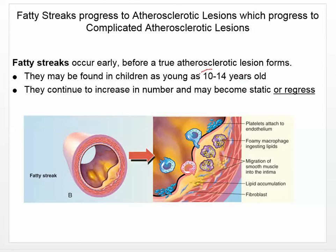The formation of fatty streaks is an indicator that you're going to form atherosclerotic lesions. The important thing to remember is that fatty streaks can be reversed — it is possible when this first starts happening for these fatty streaks to regress. But they can also continue to increase in number.